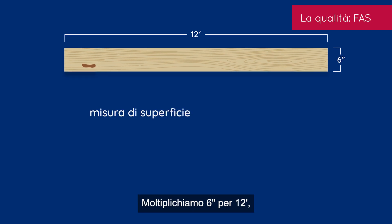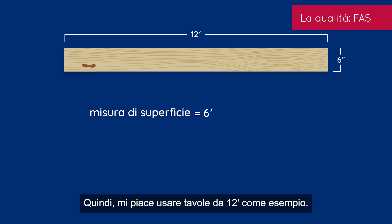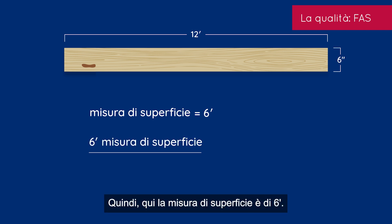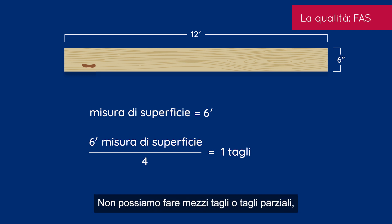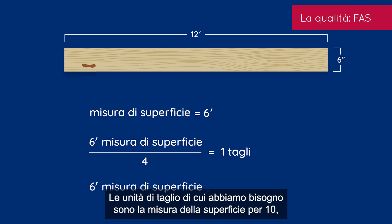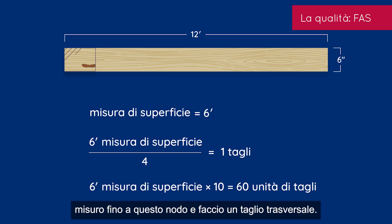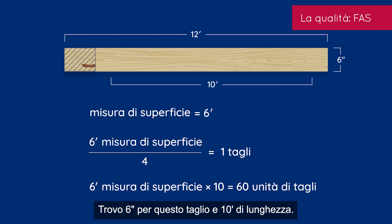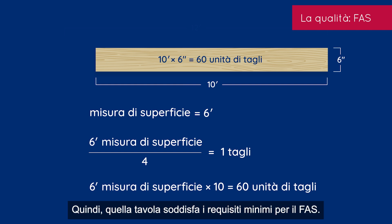Here's an example of an FAS board. The board is 6 inches wide by 12 feet. We multiply 6 times 12, divide by 12, and get 6 — so it has 6-foot surface measure. The number of cuttings: take that surface measure, divide by 4, and we get 1½. We cannot take half or partial cuttings, so we're only allowed one cutting on that board. The cutting units we need is surface measure times 10, or 6 times 10 — we need 60 cutting units. I start at this end, measure up to this knot, make a cross cut — I find 6 inches wide and 10 feet long, so 6 times 10 is 60 cutting units. That board meets the minimum requirement for FAS.